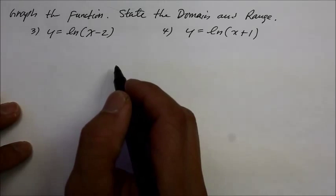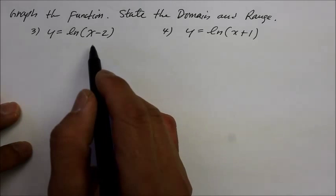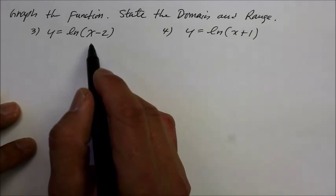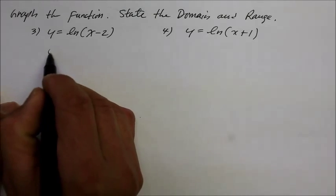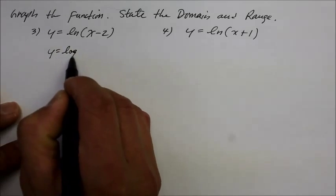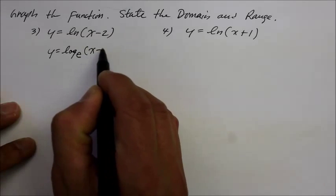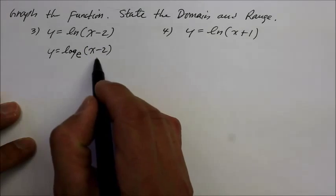Well then, how do you choose the numbers for natural log? The way I prefer is to write this in a way that I'm familiar with, which is y equals log base e of x minus 2. It's just the way I prefer it.